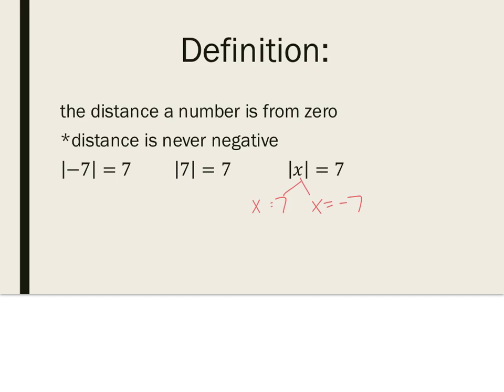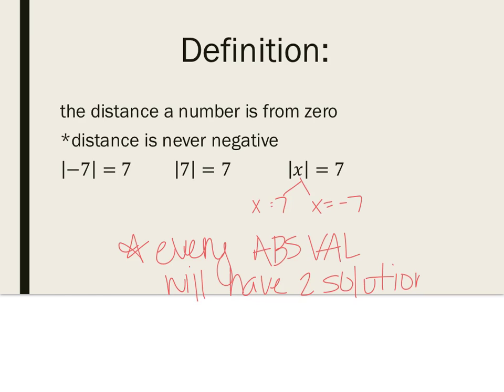So, something to know here is that every absolute value will have two answers. And that's where we get our two solutions from, is what can go inside the absolute value could be positive or negative.